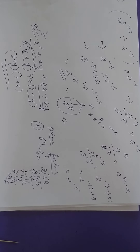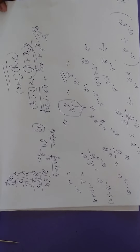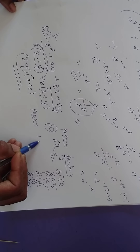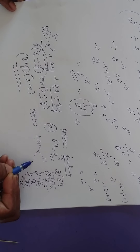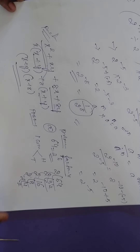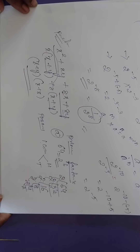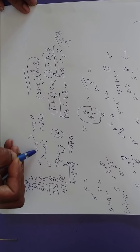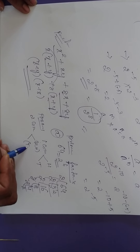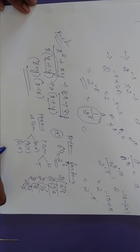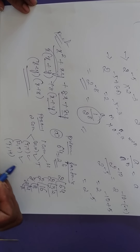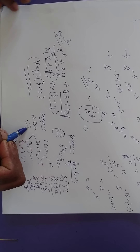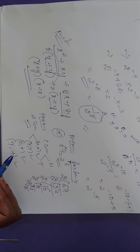If you toss one coin, either you get head or tail — these are the outcomes of one coin. If you toss two coins together, what are the possibilities? Both heads, both tails, head and tail, and tail and head — these are the four possibilities when you toss two coins.